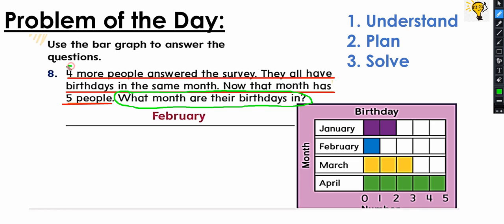So let's plan. We need to find where four more people have birthdays in the same month. Now we have January, February, March, April. If we add four here, we are going to need one more box, so no, it's not January. Let's try to add four people in February: one, two, three, four. Yes! And it says now that month has five people. So one, two, three, four, five people in February. So that is the answer - it's February.